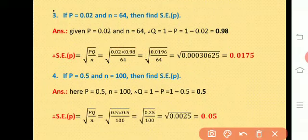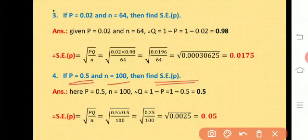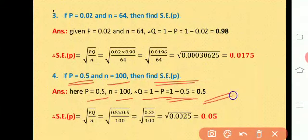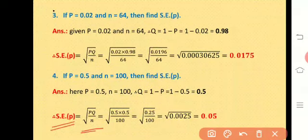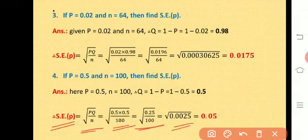Example 4: if p = 0.5 and n = 100, find the standard error of p. Given p = 0.5, q = 1 − 0.5 = 0.5. SE of p = square root of pq/n = square root of (0.5 × 0.5 / 100) = square root of (0.25/100) = square root of 0.0025. Taking the square root gives standard error of p = 0.05.